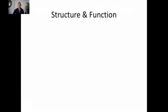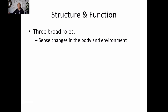Starting off, let's look at structure and function. Hopefully this is review for a lot of people, but if it's new to you, that's great too. We'll look at some basic divisions, structures, and functions of the nervous system. There are three broad roles we'll think about.